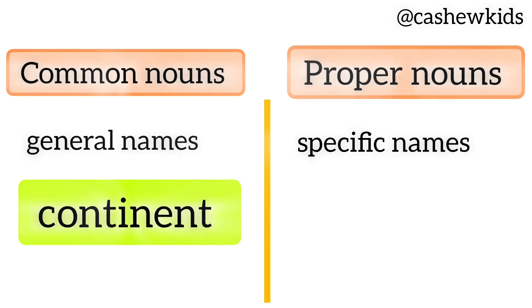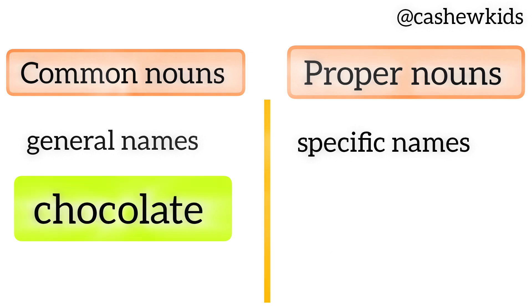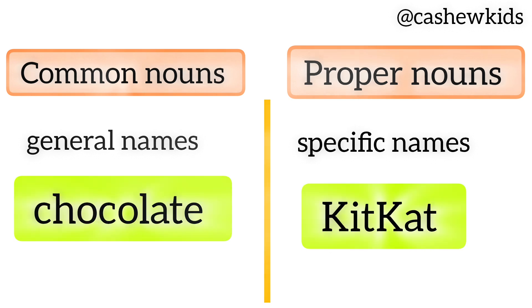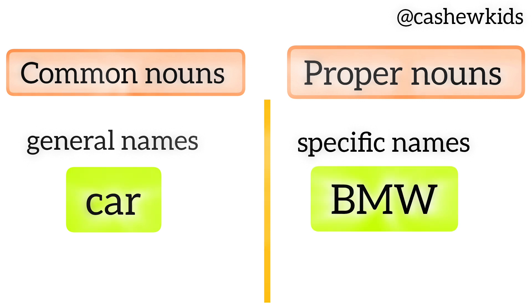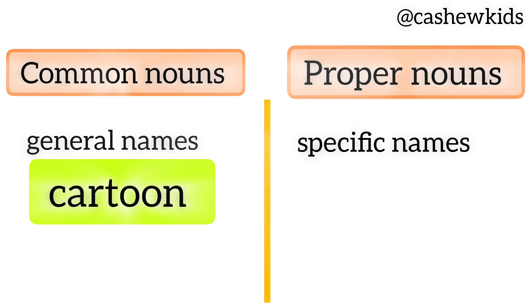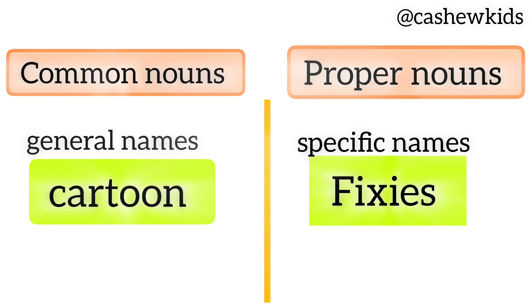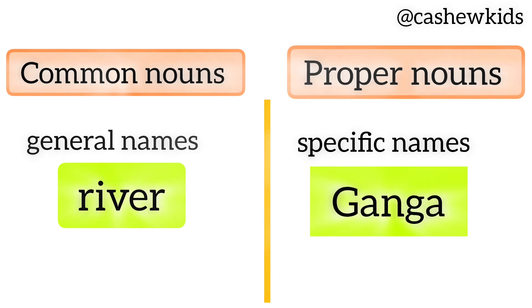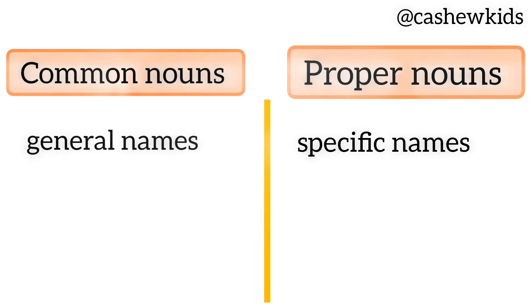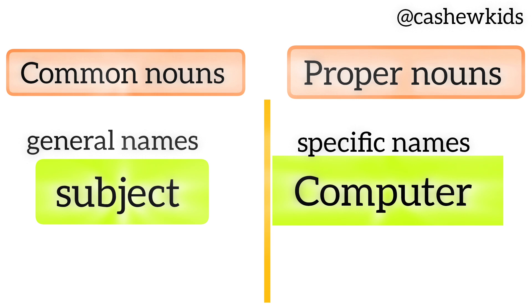Continent — Asia. Chocolate — Kit Kat. Car — BMW. Cartoon — Fixies. River — Ganga. Subject — Computer. Book.